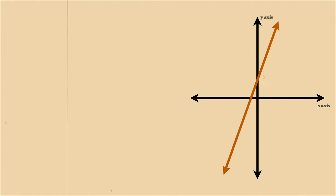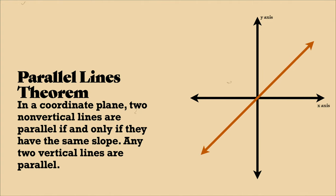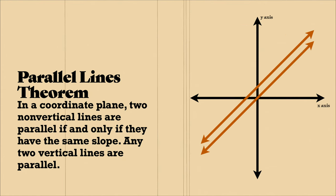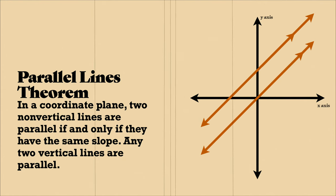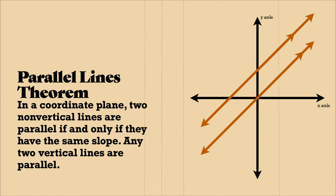Now let's talk about some theorems. First, we have the parallel lines theorem. In a coordinate plane, two non-vertical lines are parallel if and only if they have the same slope, like these two lines. Any two vertical lines are parallel.